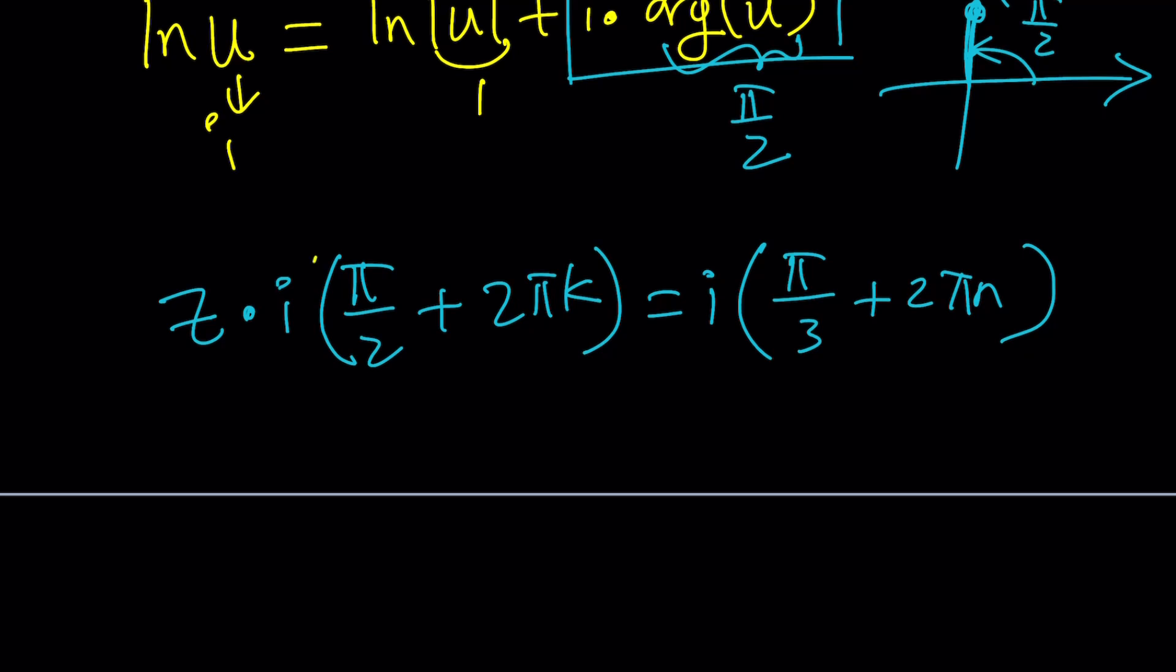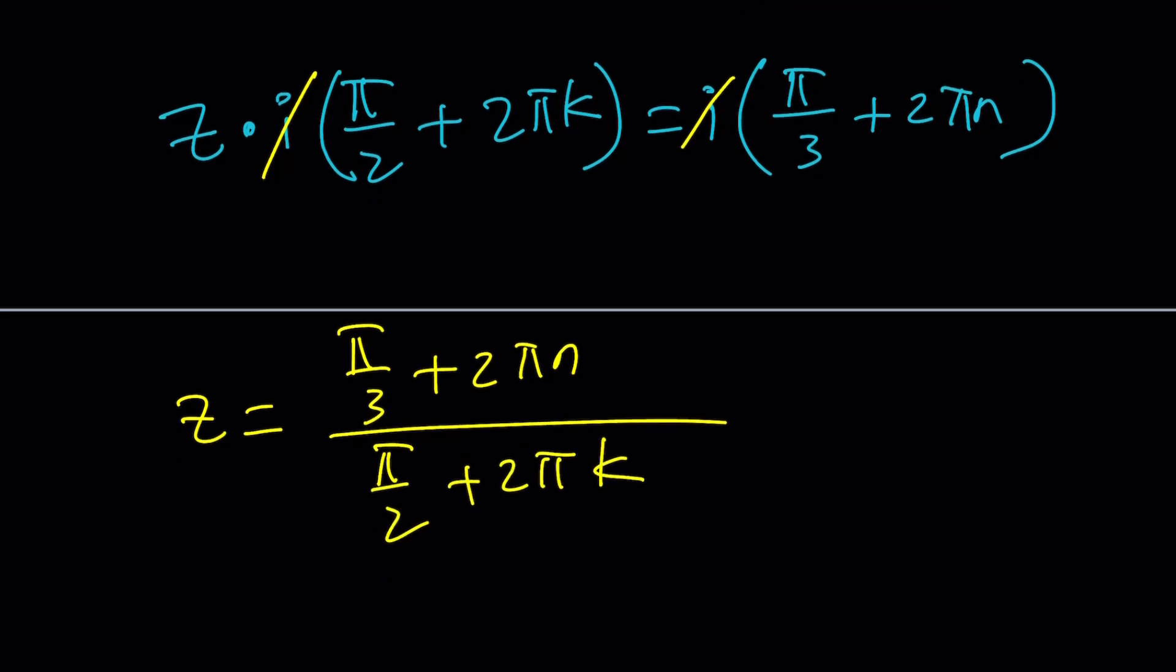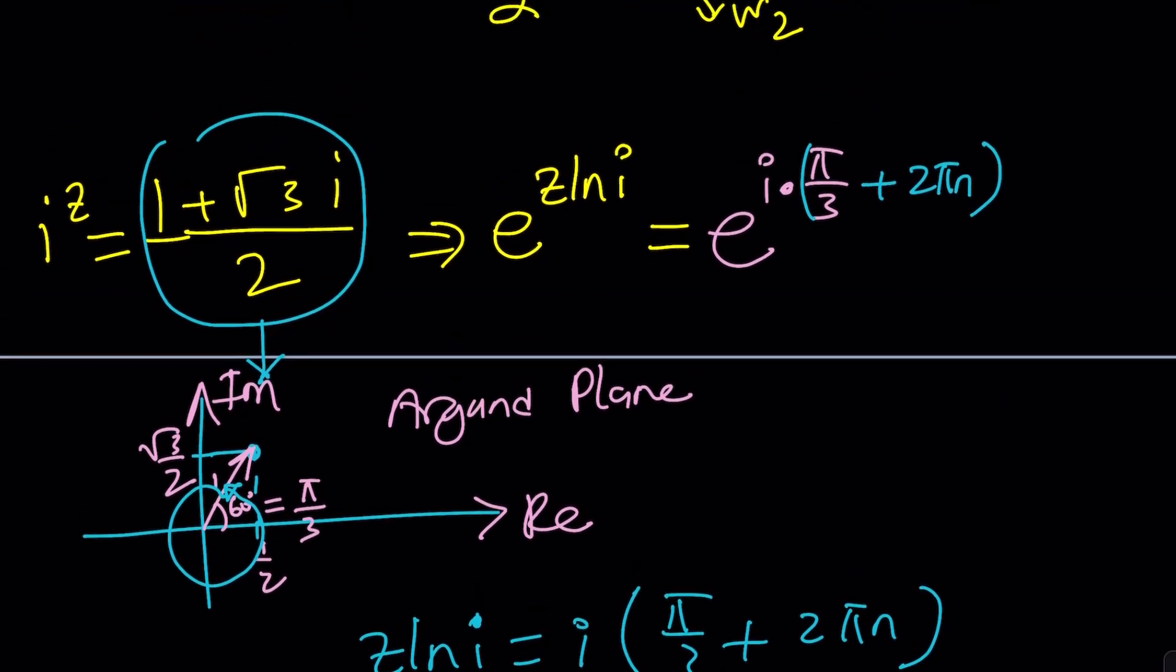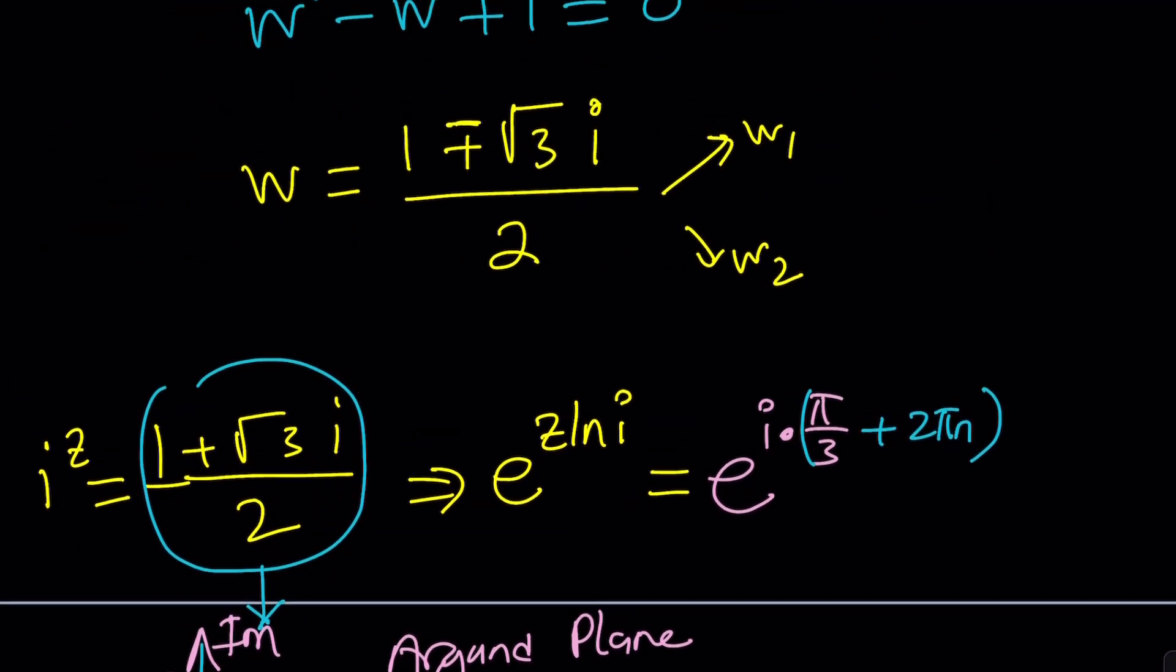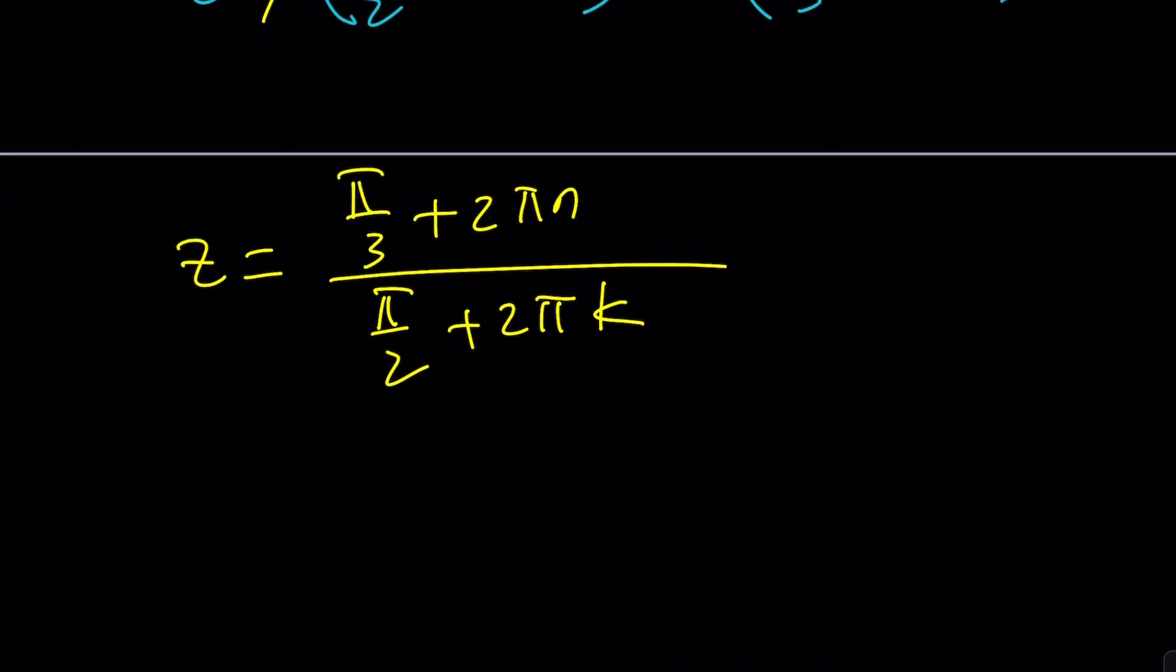I'm just going to show you one of the solutions, because the second one is fairly similar. Now, notice that i cancels out. It's not 0. And from here, we get our z value. And if you write the z here, it's going to look like this. Pi over 3 plus 2 pi n divided by pi over 2 plus 2 pi k. Do you think we can find a simple solution? First of all, consider the fact that n or k can be 0. Is there anything against that? No, I don't think so. I think they can both be 0.